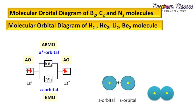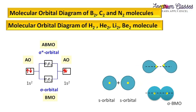When two s orbitals are in constructive interference, sigma bonding molecular orbitals are formed, which have lower energy compared to the atomic orbitals. When they are in destructive interference, they form sigma star anti-bonding molecular orbitals, which have slightly higher energy than the corresponding atomic orbitals. These are the bonding and anti-bonding molecular orbitals.